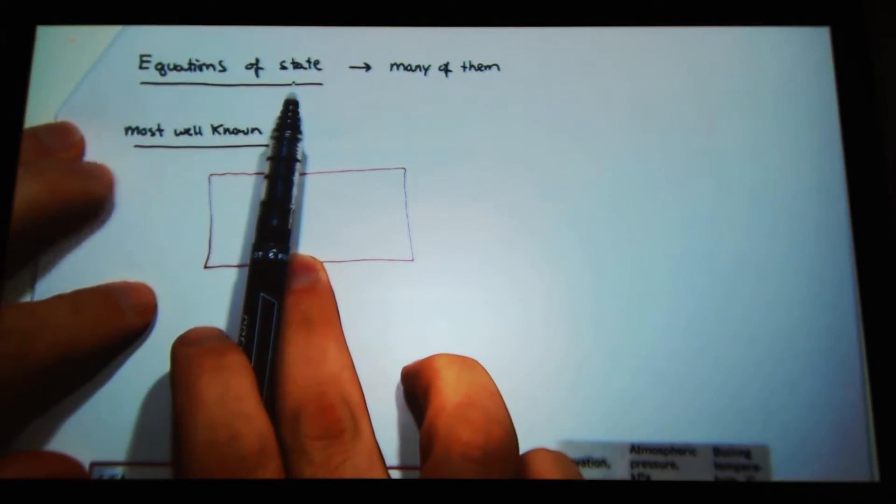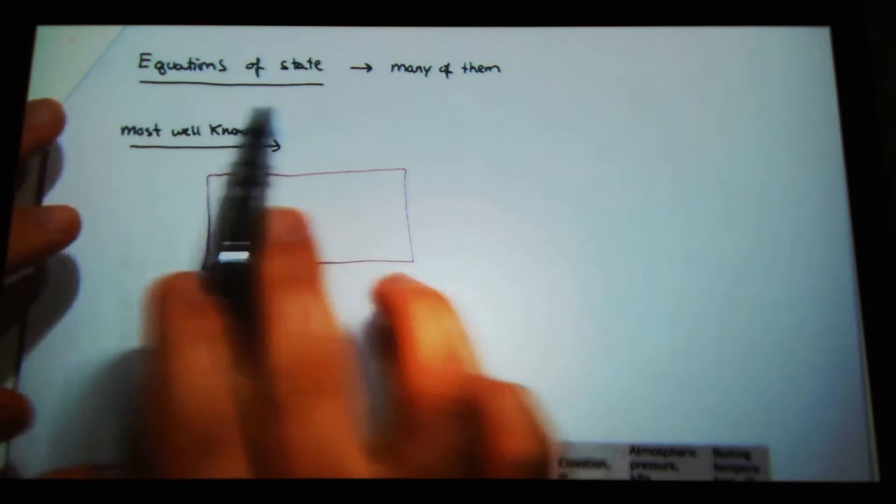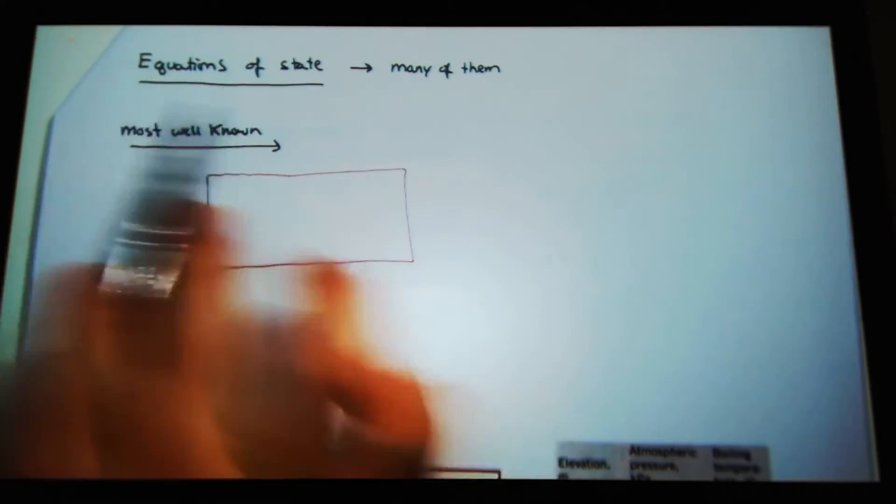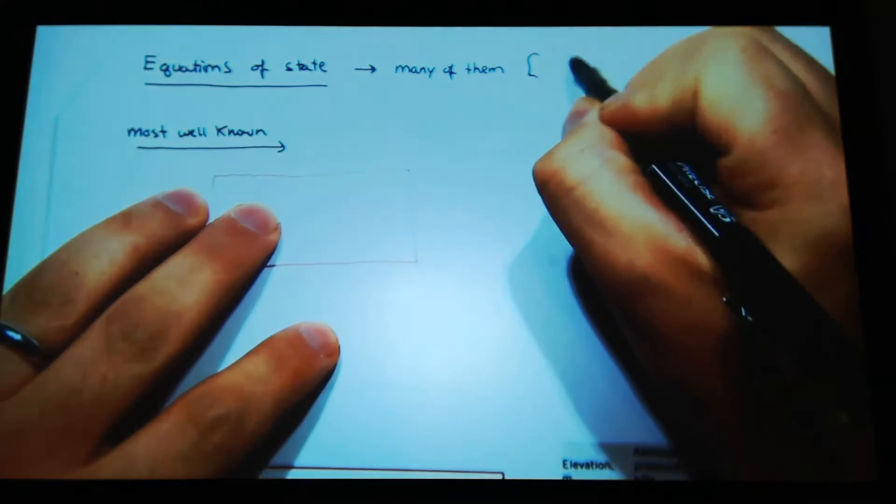Now there was the state postulate that said if you have two independent intensive properties, you can define the state of a compressible system. So there's many equations of state. What have we covered so far as equations of state?